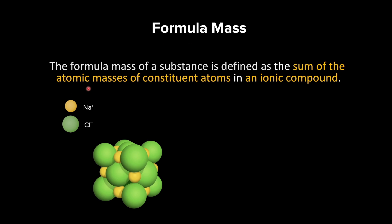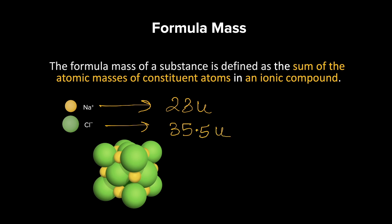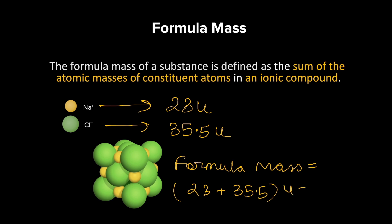Since NaCl exists as a repeating lattice of Na⁺ and Cl⁻ ions, we calculate the mass of one formula unit. The term we use is formula mass, not molecular mass. Formula mass is defined as the sum of atomic masses of constituent atoms in an ionic compound. The atomic mass of sodium is 23 u and chlorine is 35.5 u, so the formula mass of NaCl = 23 + 35.5 = 58.5 u. For ionic compounds, we always use formula mass.